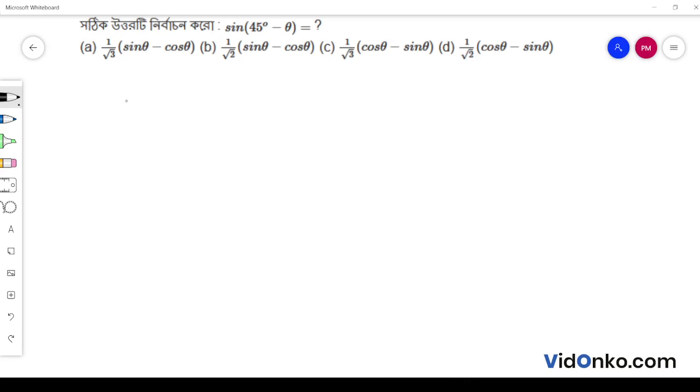sin(45° - θ) is equal to: (a) 1/√3 (sinθ - cosθ), (b) 1/√2 (sinθ - cosθ), (c) 1/√3 (cosθ - sinθ), (d) 1/√2 (cosθ - sinθ). So sin(45° - θ)...